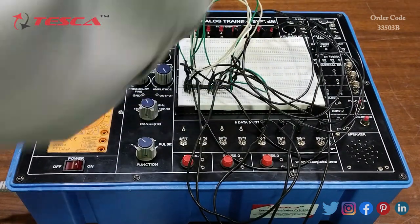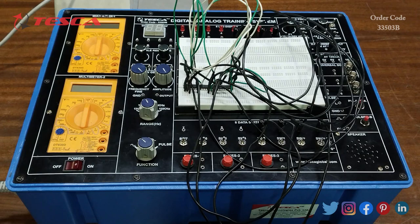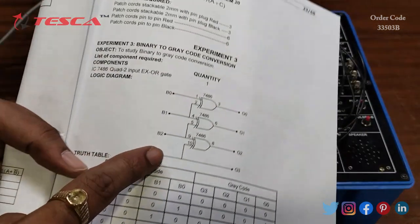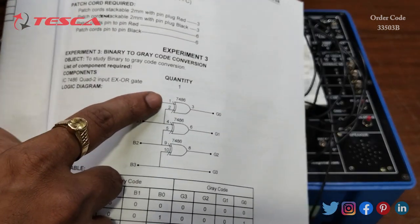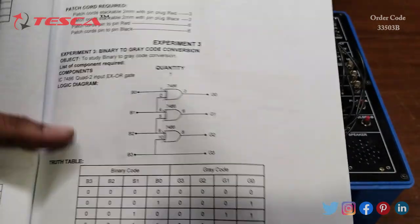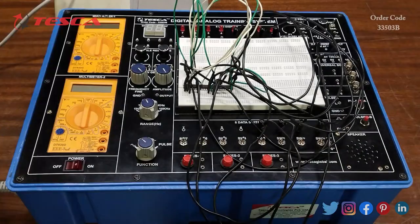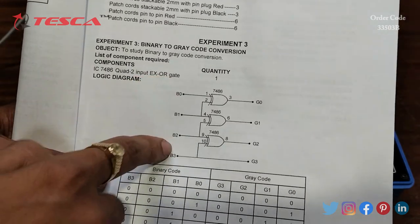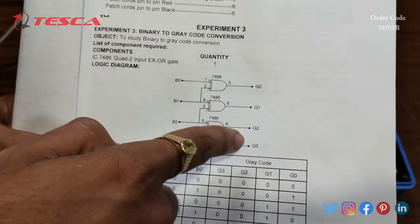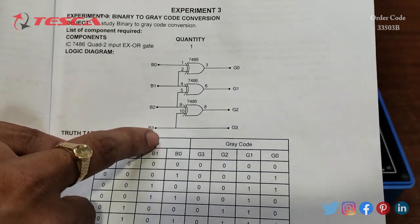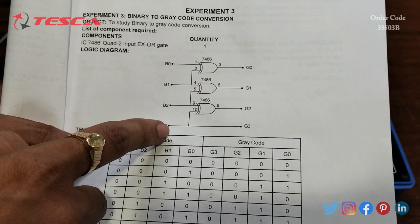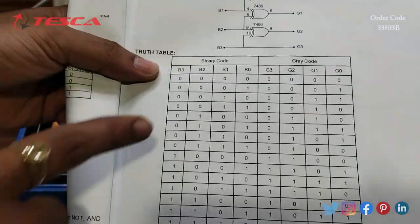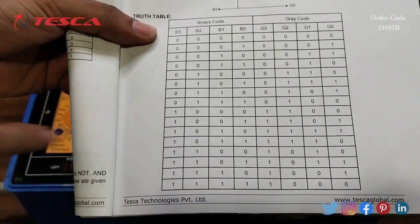The connection is mentioned in the manual. The 7486 IC with all its input pins and output pins is described in the circuit diagram in the manual. According to this circuit diagram we do the connections and now we will verify the truth table.